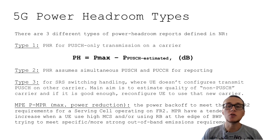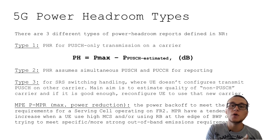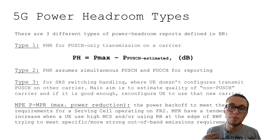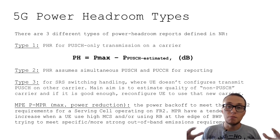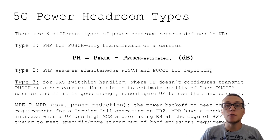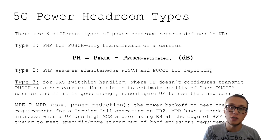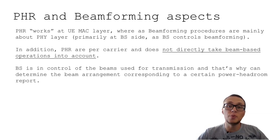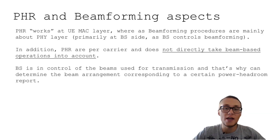One more interesting thing about power headroom is maximum power reduction. Maximum power reduction may be increased when a UE tries to transmit data in uplink with a high modulation and coding scheme at the edge of the spectrum. In this case, there may be a need to meet specific and more stringent out-of-band emission requirements, so power headroom reports can also be used in this context.